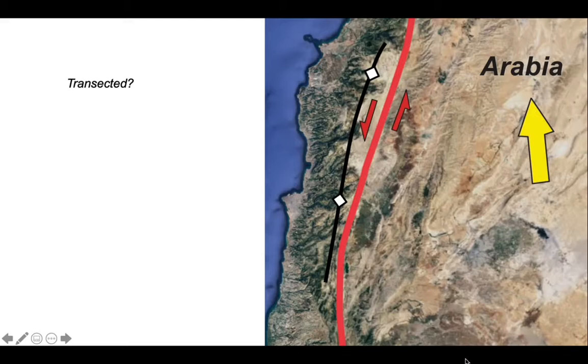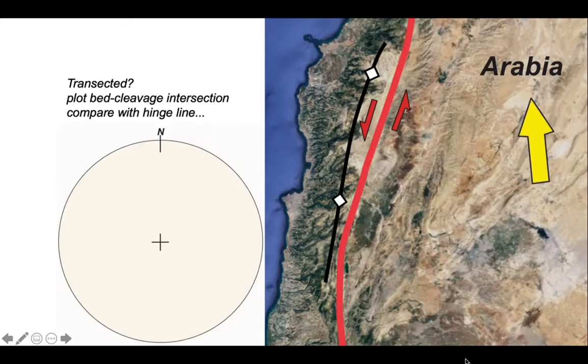And the question is, is this fold transected? Let's share some data that's been collected in the field. We're going to plot the bedding-cleavage intersection and then compare that with the hinge line of this major structure.